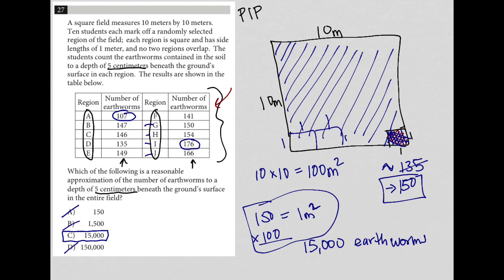We'd get 150, or sorry, we'd get 150,000 earthworms by multiplying this 150 here by 1,000. And we cannot fit 1,000 of these one by one squares inside.